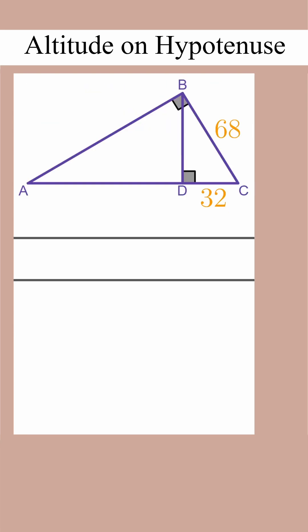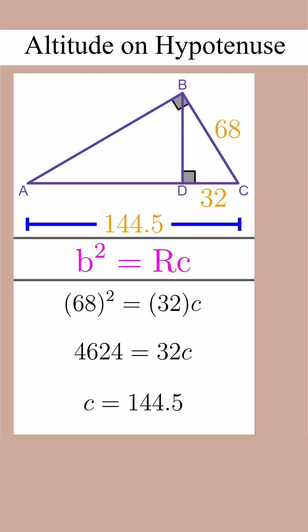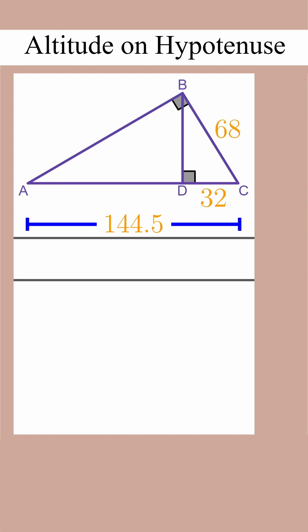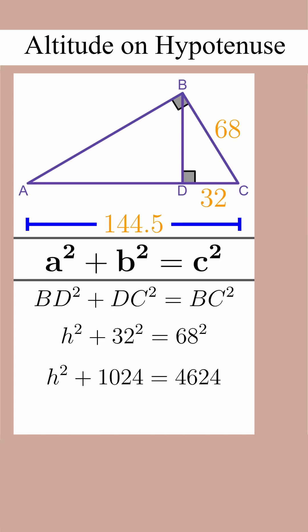Let's say I want to find the area, so I probably want to find the base AC. Let's use the geometric mean theorem: B squared equals RC. We see that c is equal to 144.5. We can then use the Pythagorean theorem on the triangle on the right to find BD, which is 60.